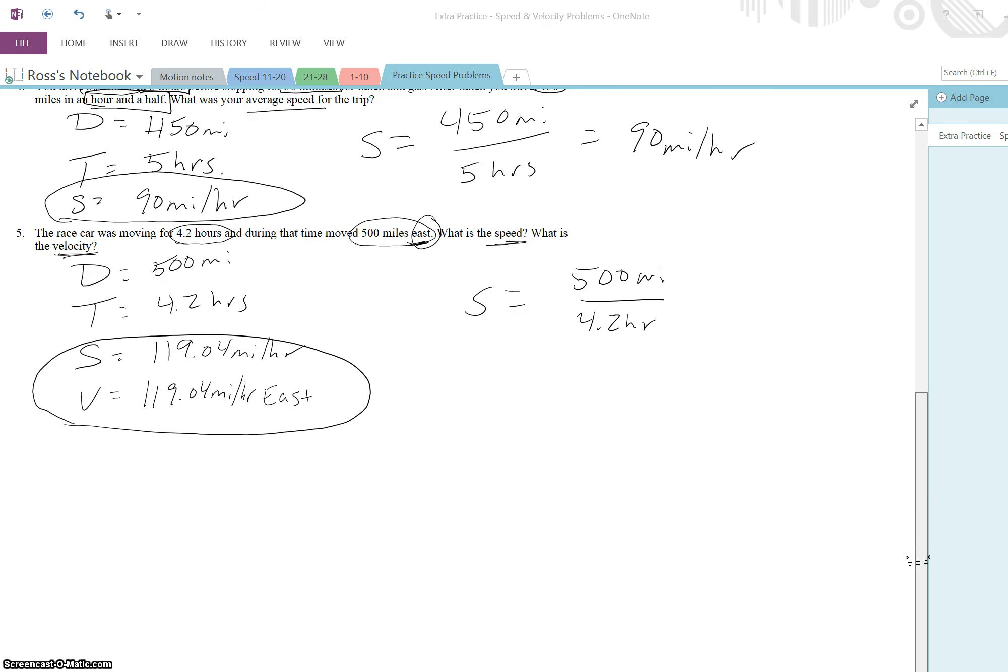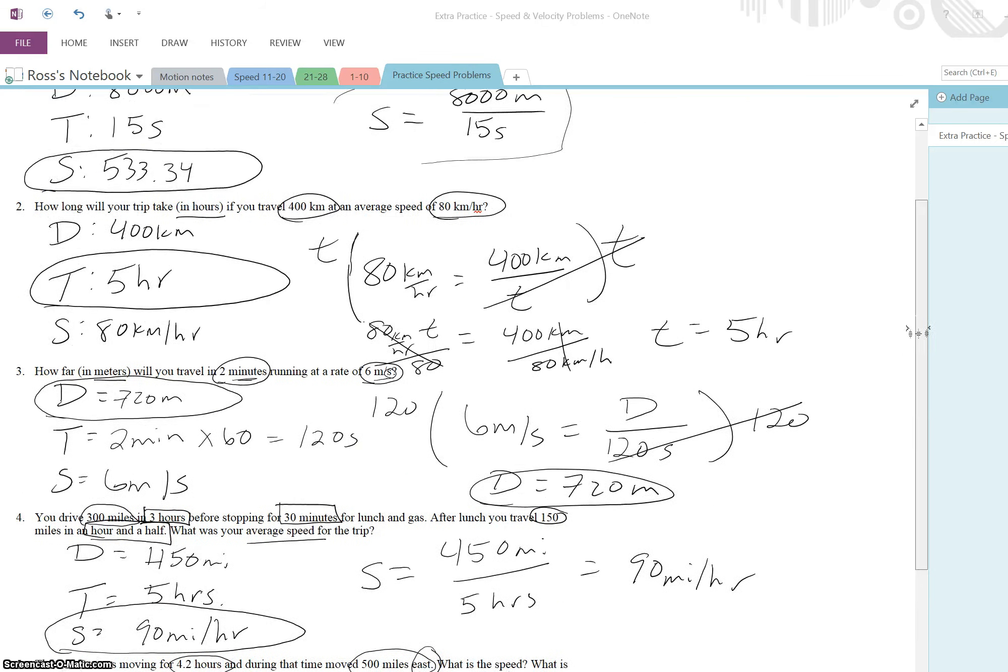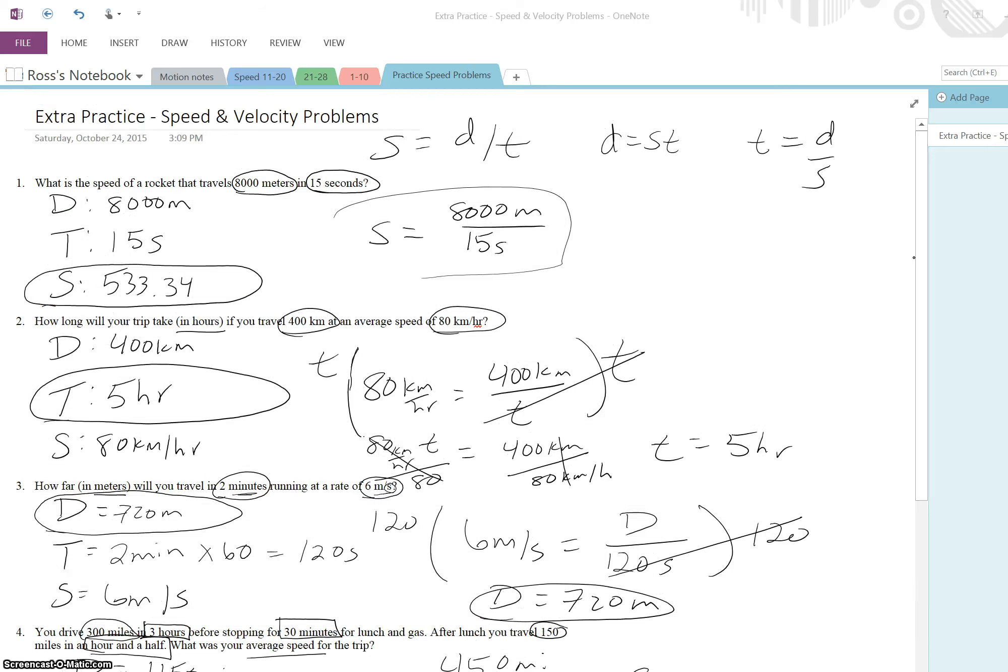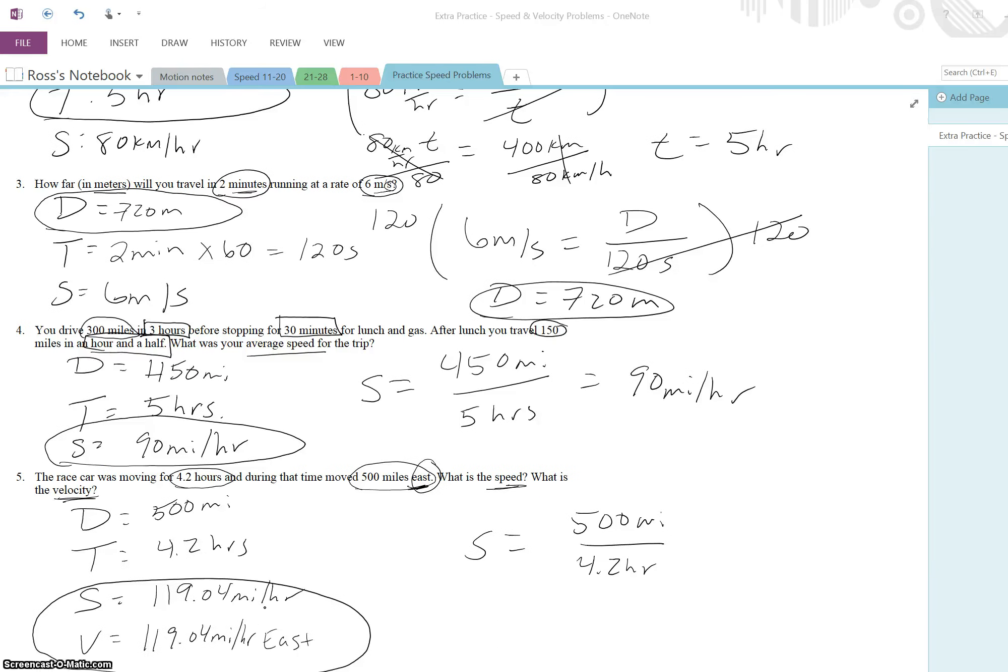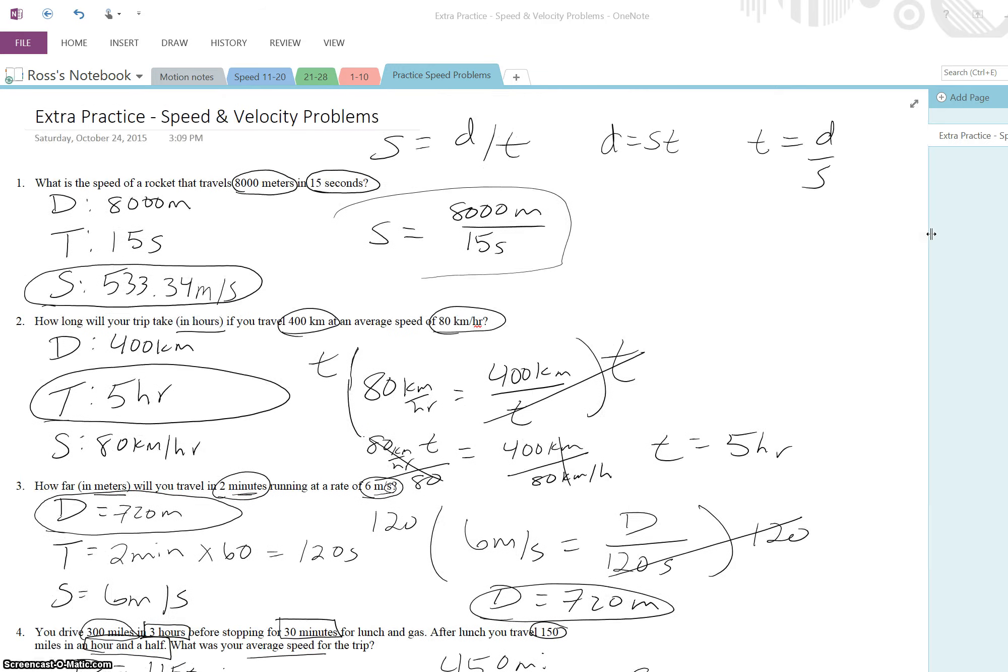So just a couple quick things as a reminder for these problems. Always make sure that in our answer we have units. Look at this, I forgot my units. Meters per second. So always double check. Go back through your answers. Make sure each of your answers has units. Each problem we're going to set up with D, T, and S. You can do it in any order that you want, but I think this makes the most sense because we divide distance by time to get speed.